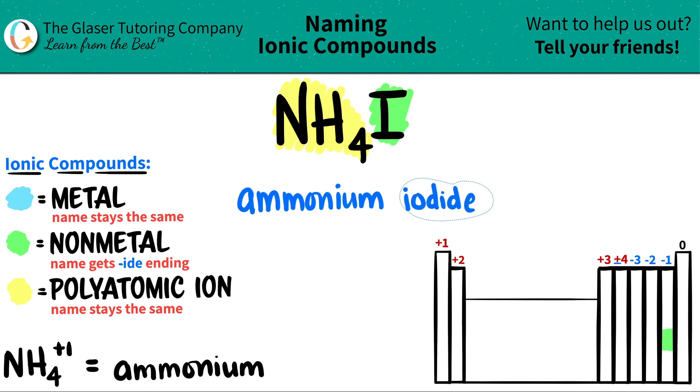And that's it. Since there technically are no metals here, I don't have to worry about Roman numerals, right? The Roman numerals are only for transitional metals, so we don't have to worry about that. So this is it. NH4I is ammonium iodide.